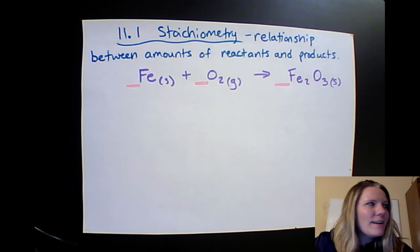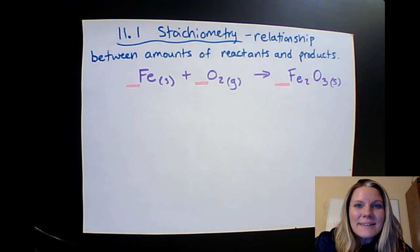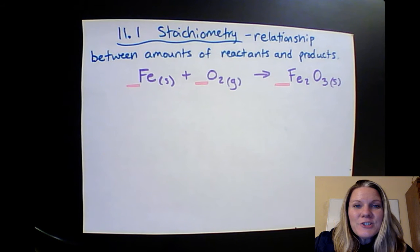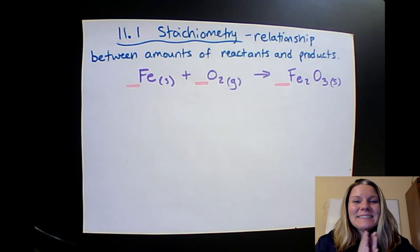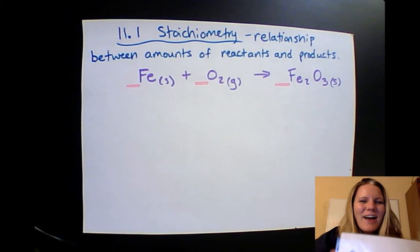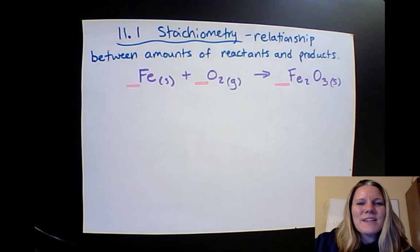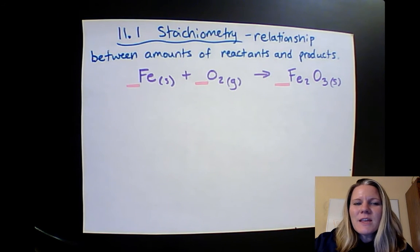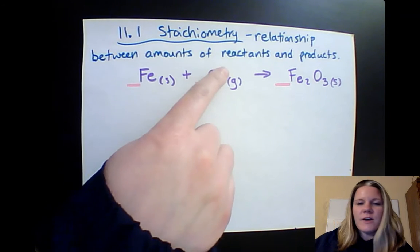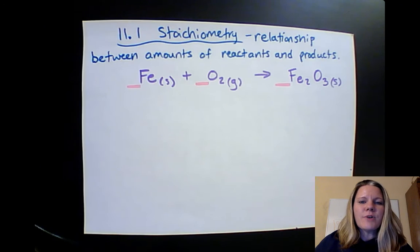You guys, we made it. We're in chapter 11, stoichiometry. So excited. All right, let's start off with the definition of stoichiometry. It's the relationship between the amounts of reactants and products.